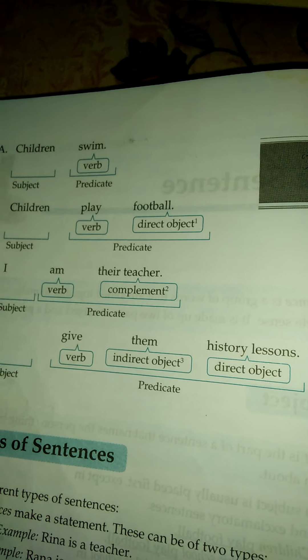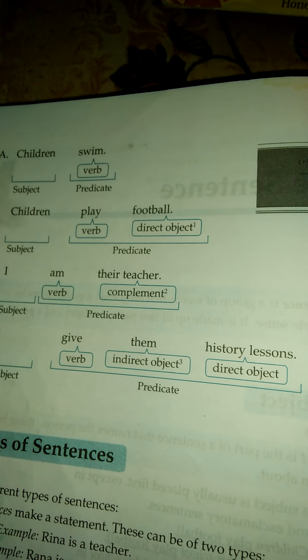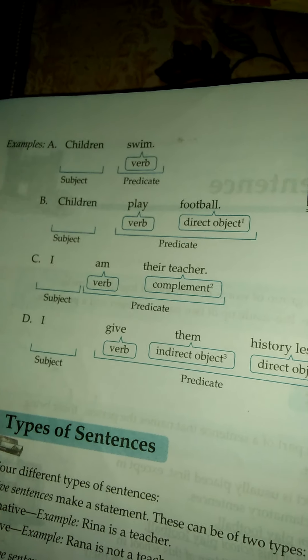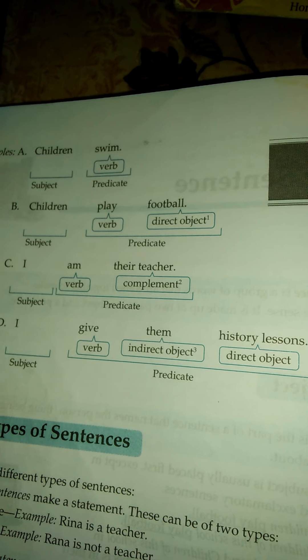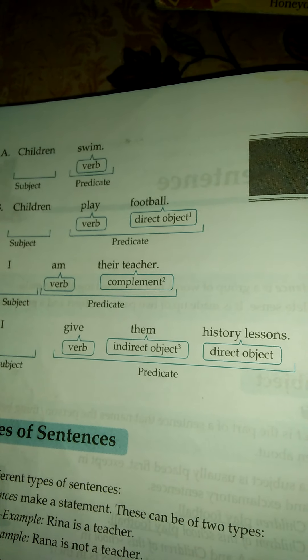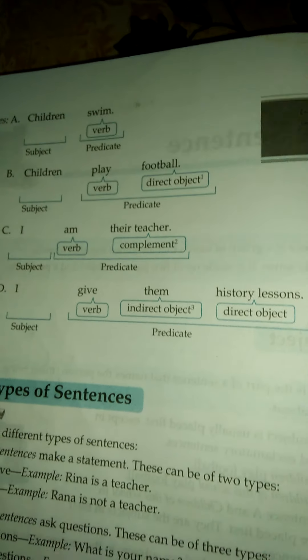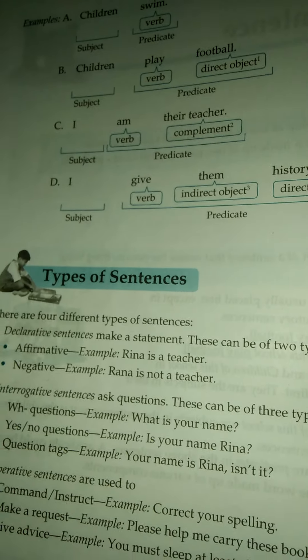The object showing what is done or given to the person is called the direct object. The same example, I give them distillation. Distillation is the direct object. Now types of sentences.